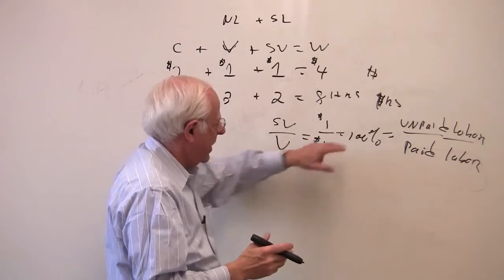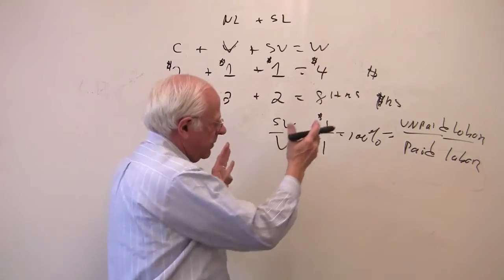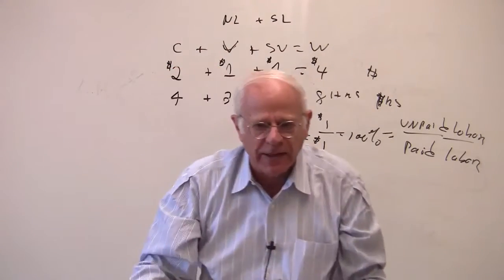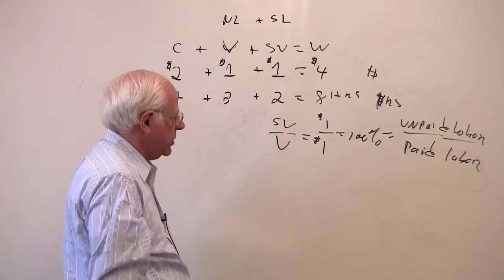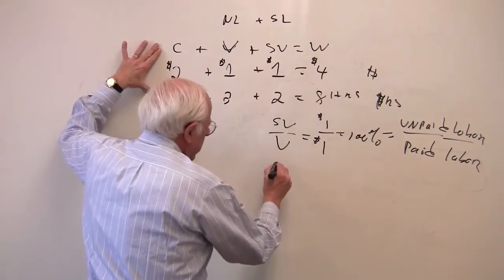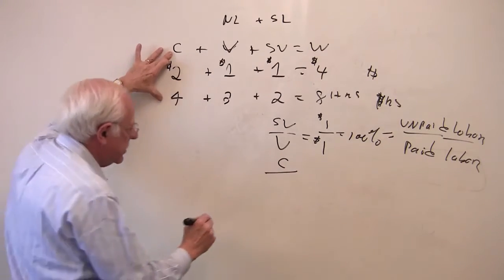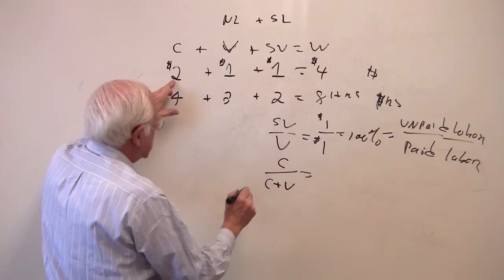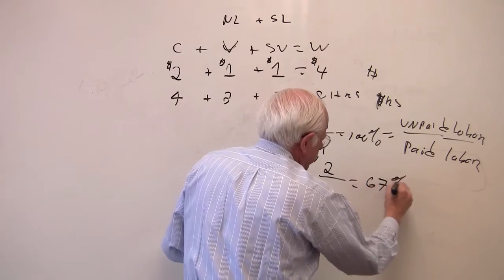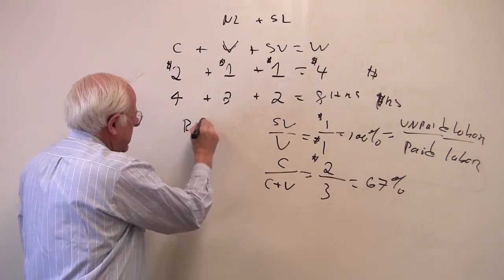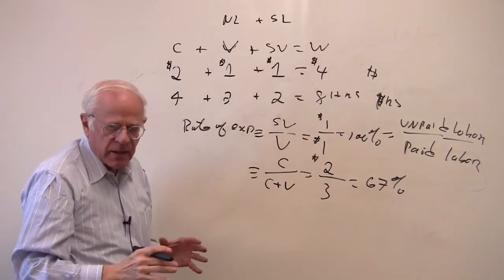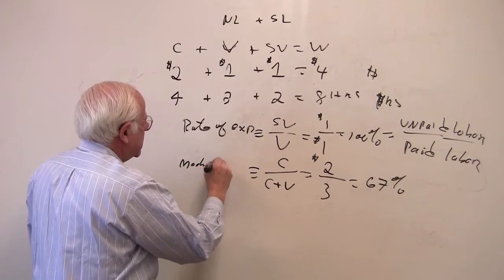It's an index of how the rate of exploitation changes over time — unpaid over paid labor. The total of the unpaid plus the paid is the value added by the worker, but the worker only gets a portion back. So the ratio is measuring how that portion changes over time — rate of exploitation. Another measure by Marx is the relationship of the total value of the means of production to the total cost of production, which in this case would be $2 over $3, or 67%. This one is an index of mechanization.